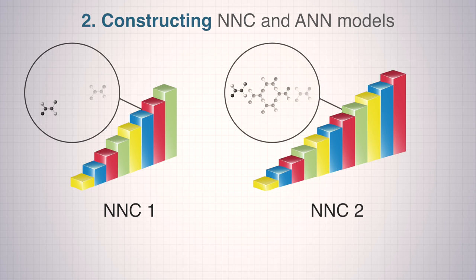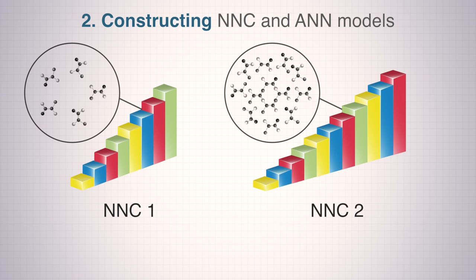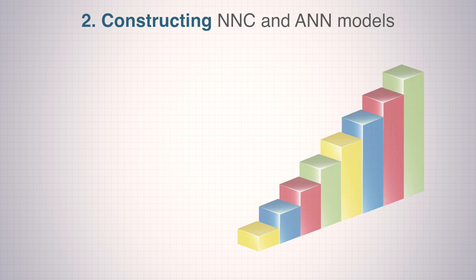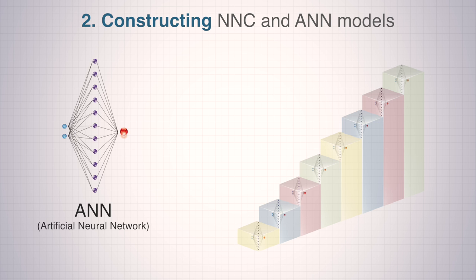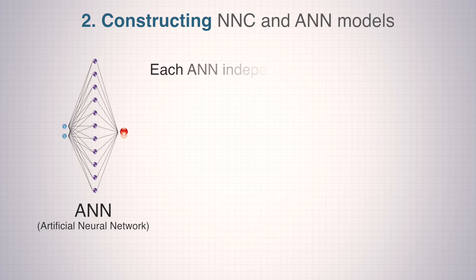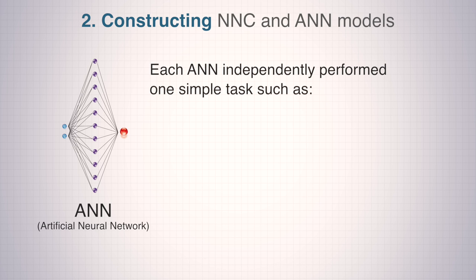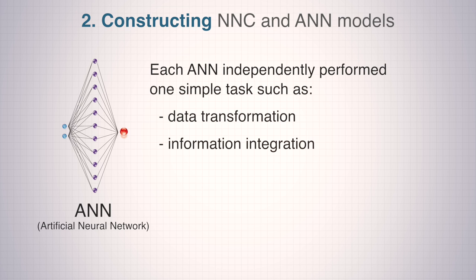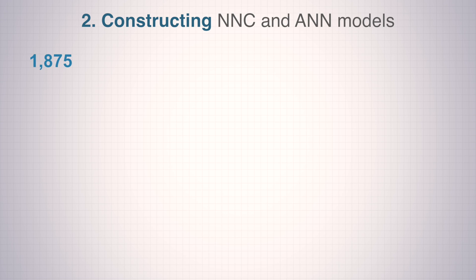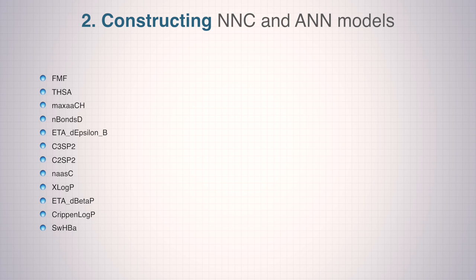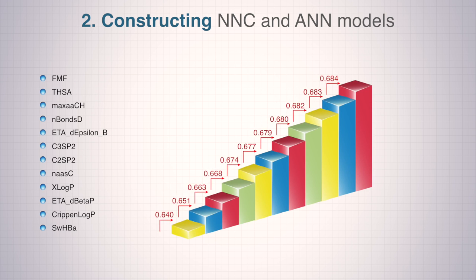NNC2 used a structurally more diverse and larger set of compounds than NNC1. The NNC was a cascade of many small ANNs in a ladder-like framework. Each ANN independently performed one simple task such as data transformation, information integration, or prediction output. From 1,875 molecular descriptors, 12 were shortlisted, and the one with the highest correlation to P450 inhibition became the latter's highest point.